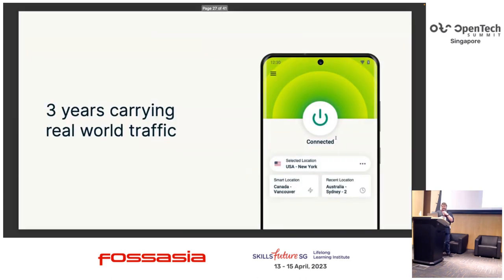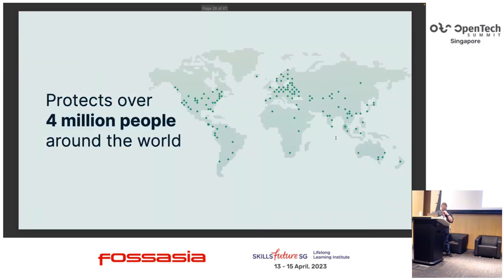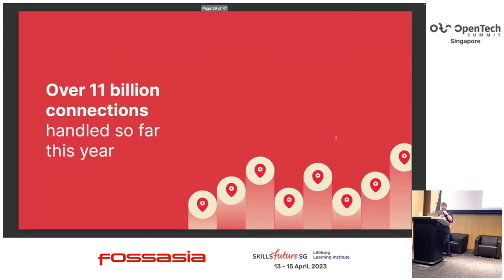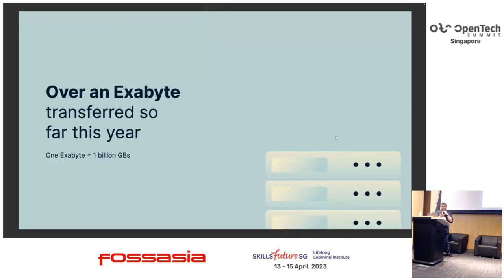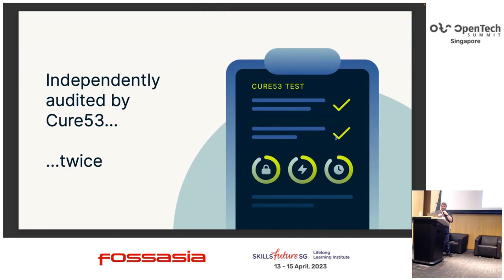Lightway has been around three years carrying real-world traffic. It protects around four million people around the world. So far this year it's handled over 11 billion individual connections, and we've transferred on average just over an exabyte of traffic. It's also been independently audited by Cure53 — once when we open sourced it and went live, and again quite recently — so we're keeping up the public auditing of the protocol.